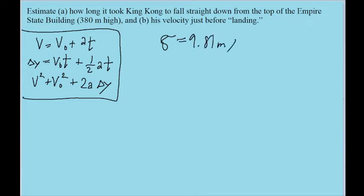And we're looking for a few details about the problem. We're looking for, first off, part a, we're looking for how long it took him to fall all the way down. Now if we assume that the acceleration is constant, that means we can use any of these three kinematics equations.